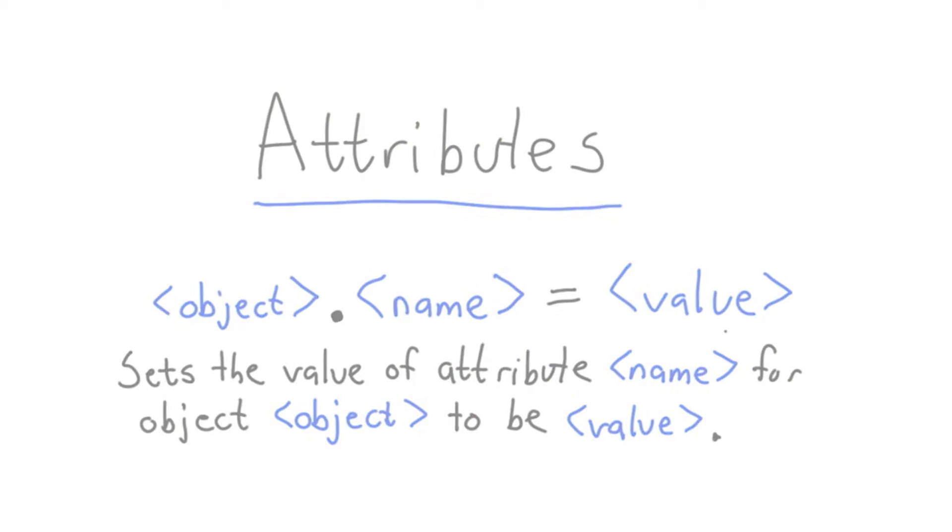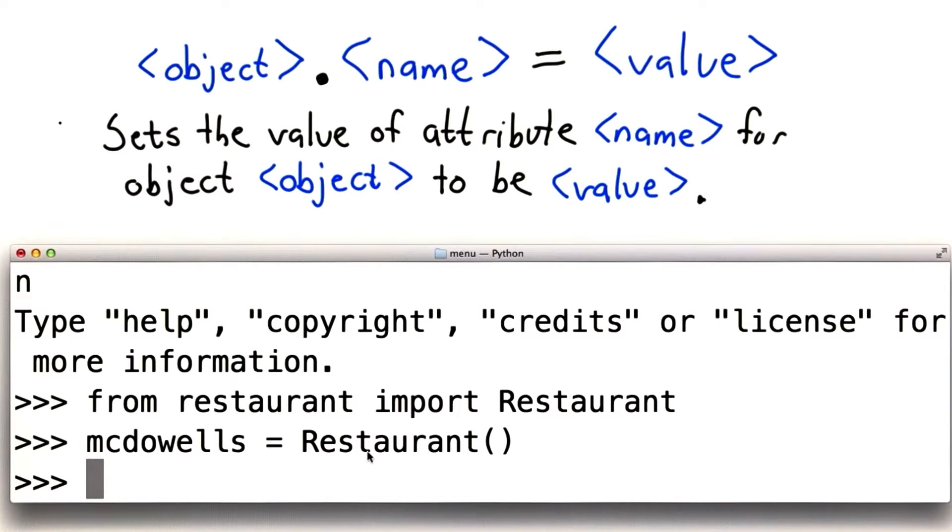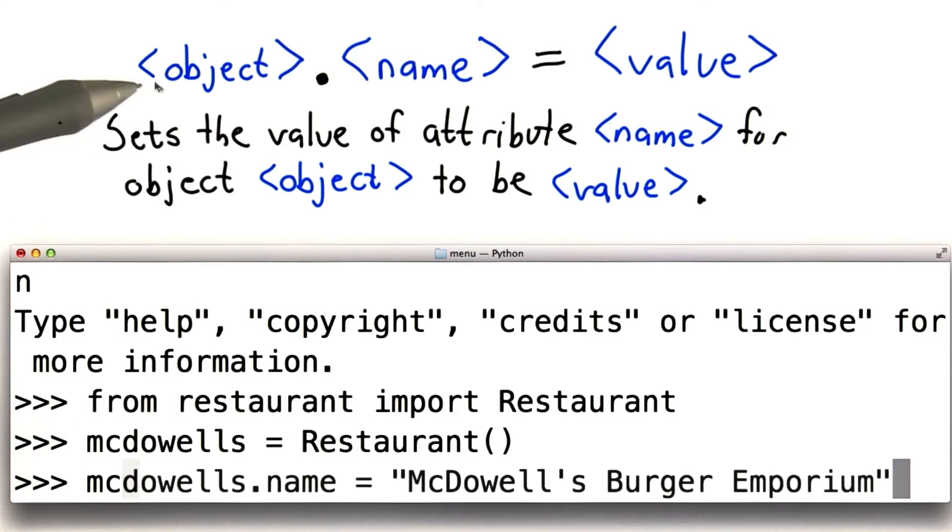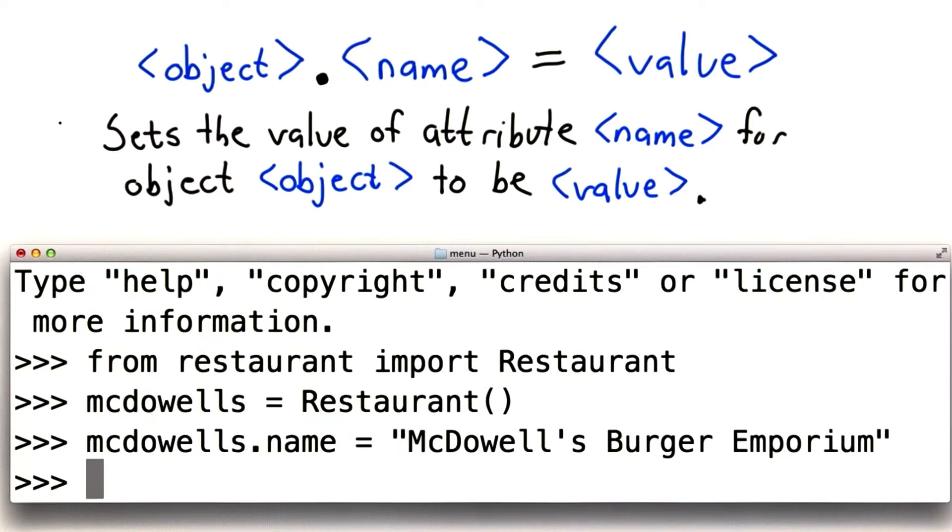So let me show you an example. So here we've created an instance of the restaurant class. It has no attributes yet, but we can add one. Using the syntax, we're adding an attribute name and giving it the value of the string, McDowell's Burger Emporium. And now we can use that attribute.